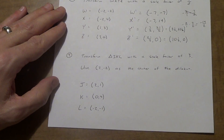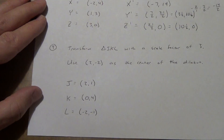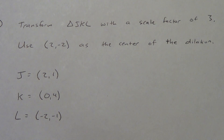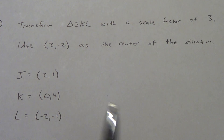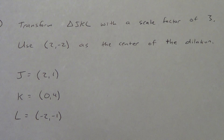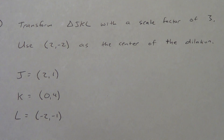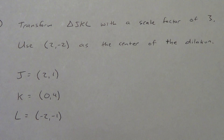Last example — example number four. We are going to transform triangle JKL with a scale factor of three, using two, negative two as the center of dilation. This is a little different. We cannot just multiply — we can't take two, one times three and get six, three. That would only work if the center of dilation was zero, zero. Since it's not, we're going to have to go back to the counting method. Graph those three points and the center of dilation as a separate point.